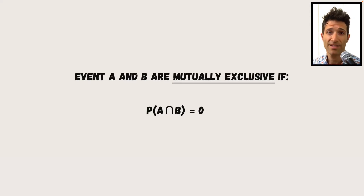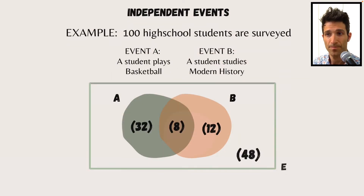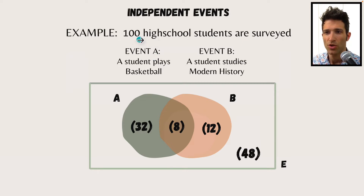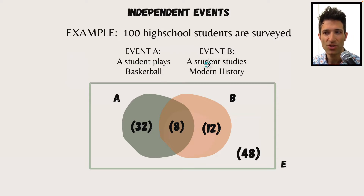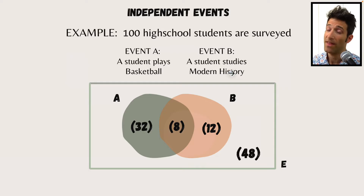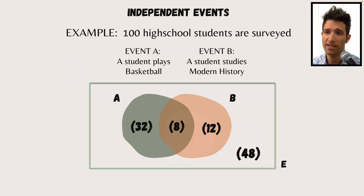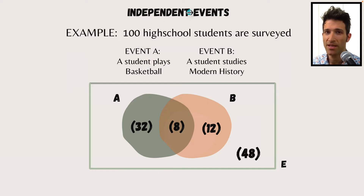Let's have a look at independence now. We're using the same 100 high school students. Event A is still that a student plays basketball, but here event B is a student studying modern history. You might think that studying modern history doesn't really affect the possibility of someone playing basketball — and you might be right. But we need to have a look at the numbers, and that's the key to independent events.